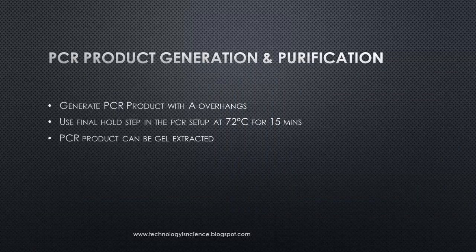To generate the PCR product for TA cloning, we need a PCR product with an A overhang. We can use Taq DNA polymerase and do a regular PCR — either two-step or three-step. There is no need to introduce any restriction sites into the primer; general primers can be used. Adding a hold step at the end of the PCR cycle at 72°C for 15 minutes will help add the A overhang, as Taq polymerase adds a single base A to the 3' end of the PCR product.